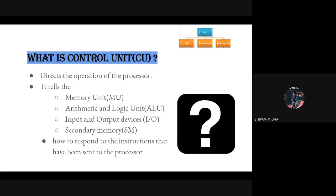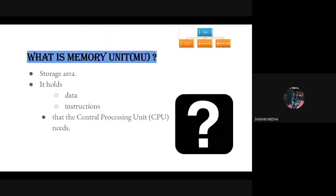CU stands for Control Unit. It controls all functions of the computer - it tells the MU, ALU, input/output devices, and secondary memory how to respond to the instructions that have been sent to the processor. MU stands for Memory Unit. It is also known as the storage area and holds data or instructions that are needed by the CPU.